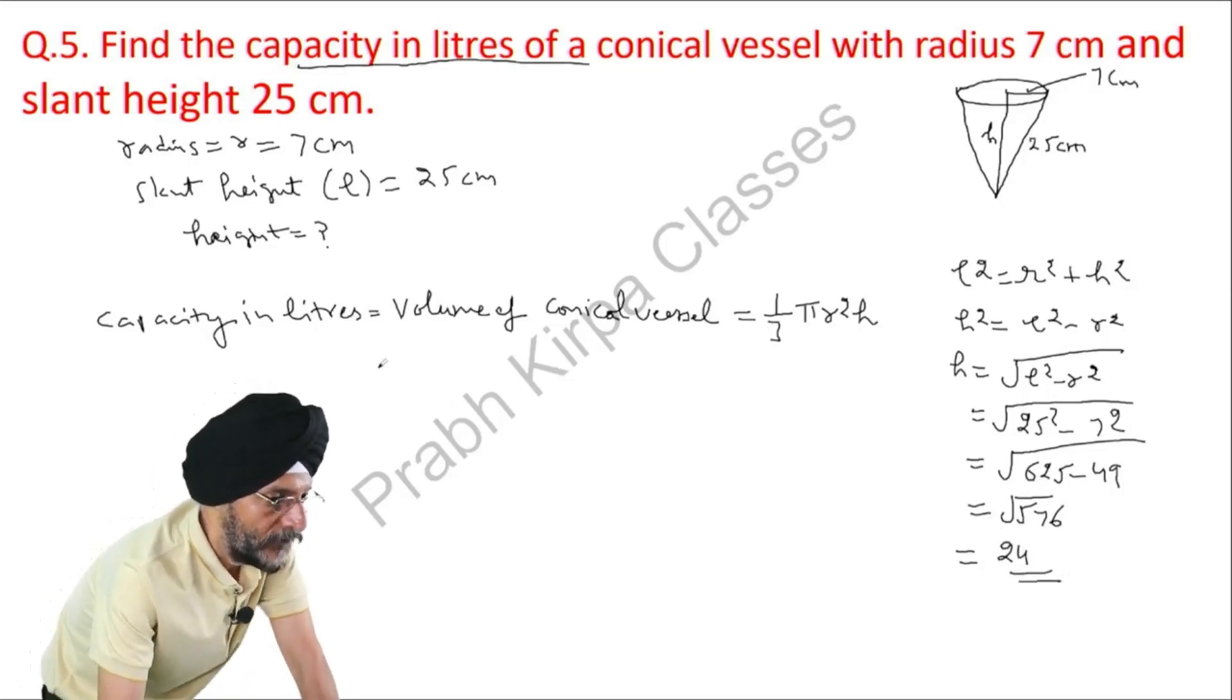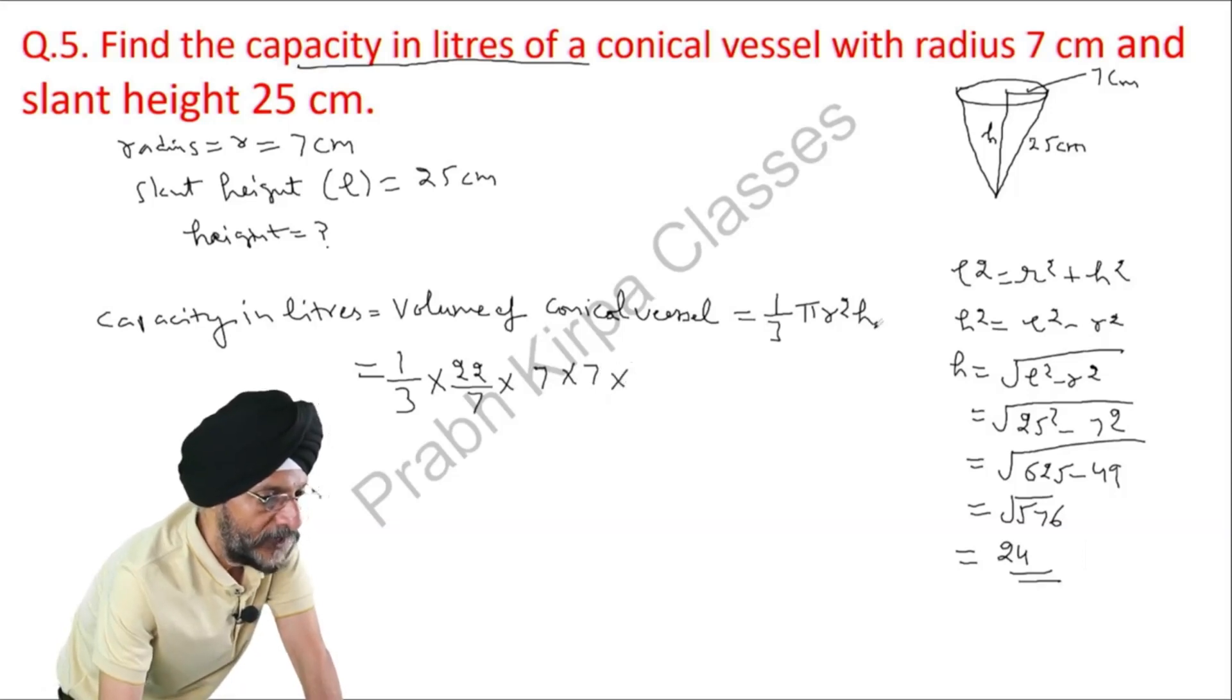So, we will put in here the values: 1 over 3. What is the value of pi? It is 22 over 7. What is the value of r? It is 7. What is the value of height? It is 24 which we have calculated.